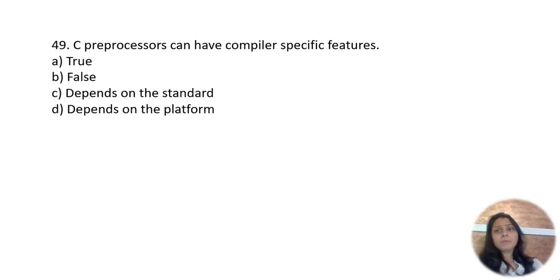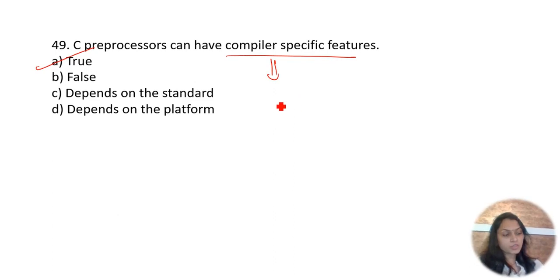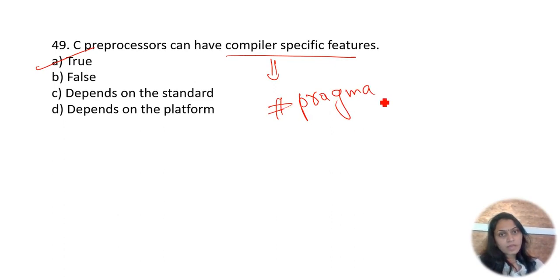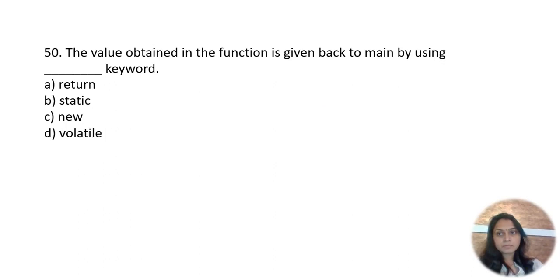Can the C preprocessor have compiler-specific features? Yes, C has compiler-specific features. #pragma is one of the C compiler-specific preprocessor features.